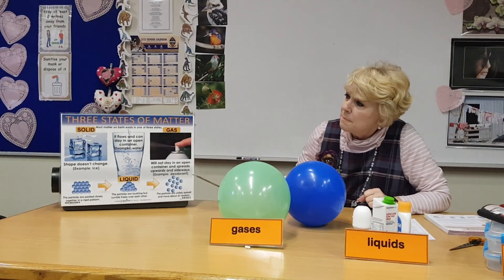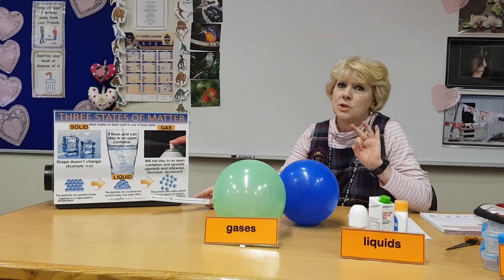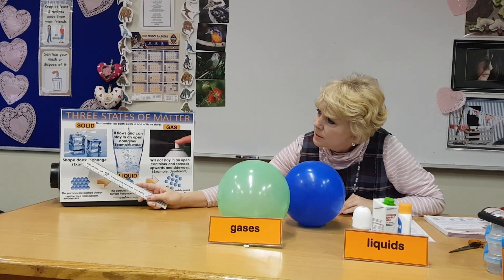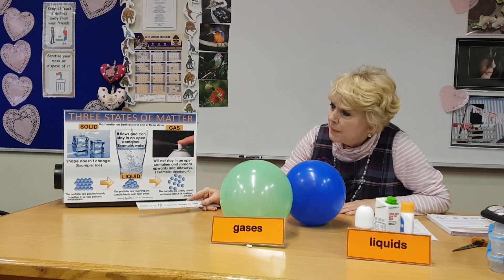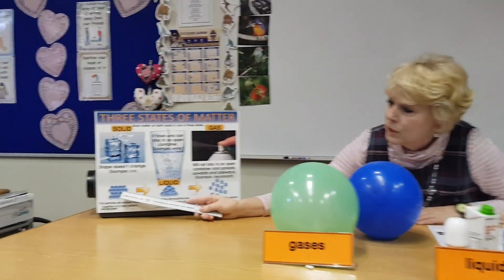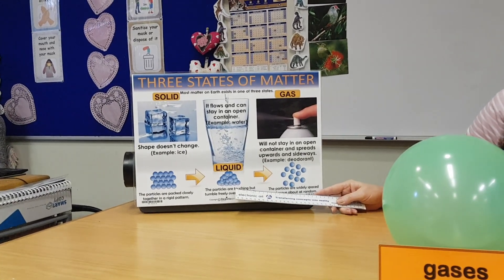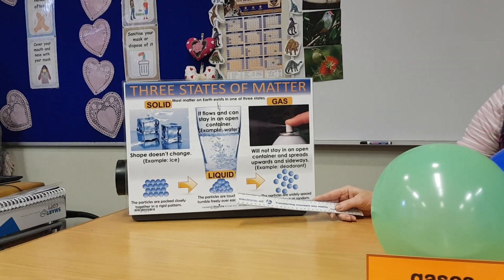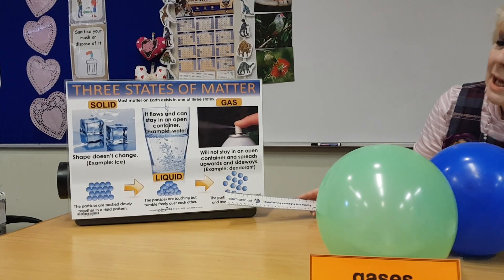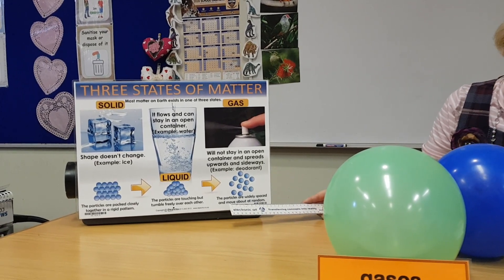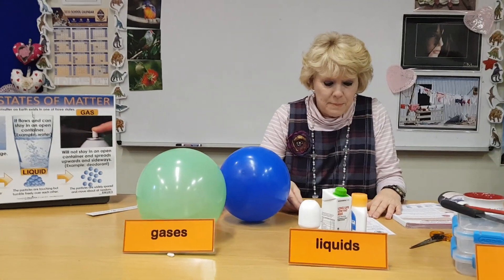I want you to look at this diagram over here. We took water and showed it in three states. The solid is an ice block — the shape doesn't change and stays the same. Look at the particles because they are very close to each other. In the liquid state, the particles are touching but move freely over each other. For the gas, particles are far away from each other, and it will not stay in an open container — it spreads upwards and sideways.